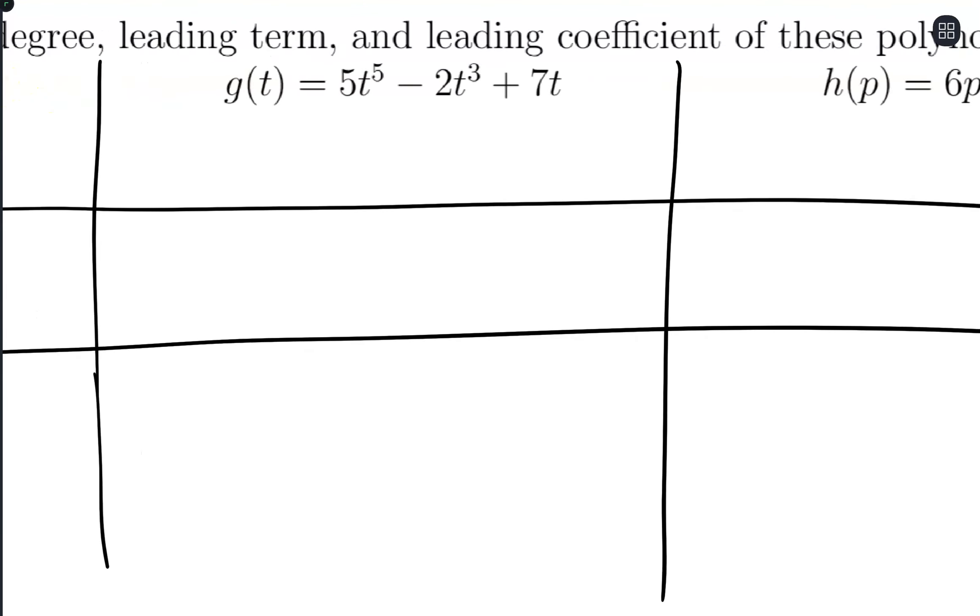Let's look at this one: g(t) equals 5t to the 5th minus 2t cubed plus 7t. Looking at degree, leading term, and leading coefficient, I'm looking for the term with the largest exponent, which is at the front here, 5t to the 5th.